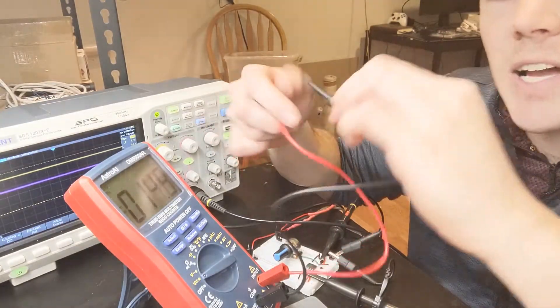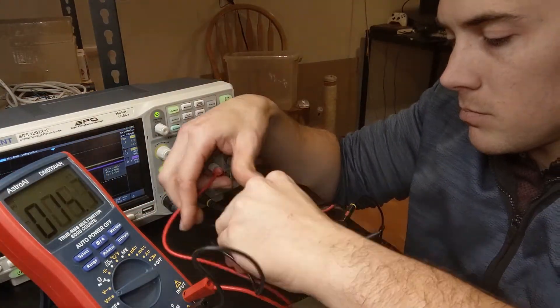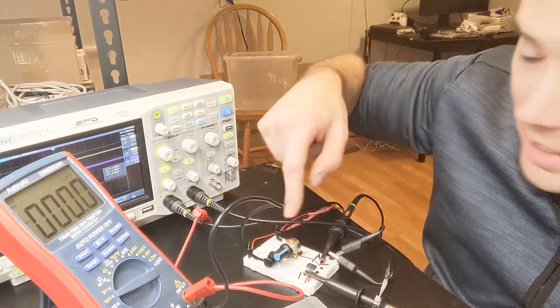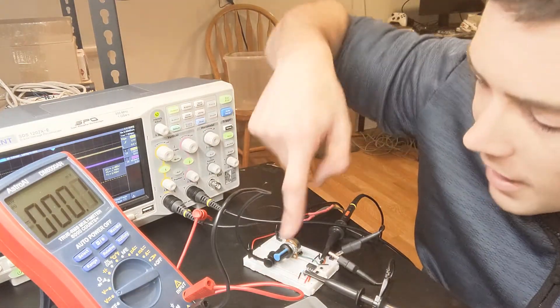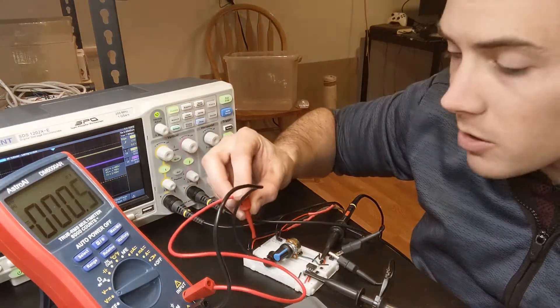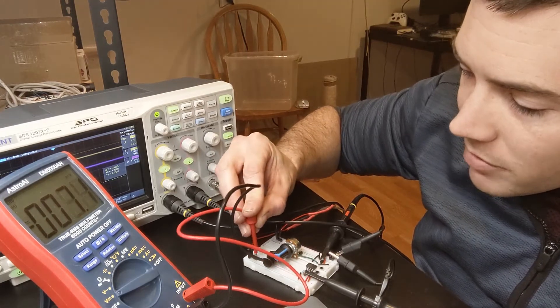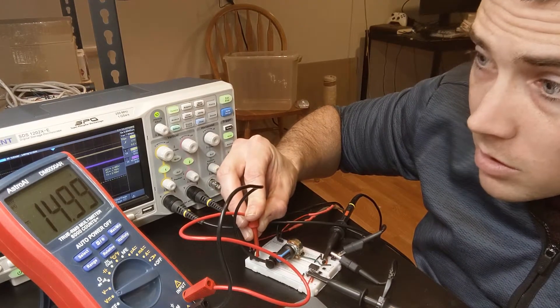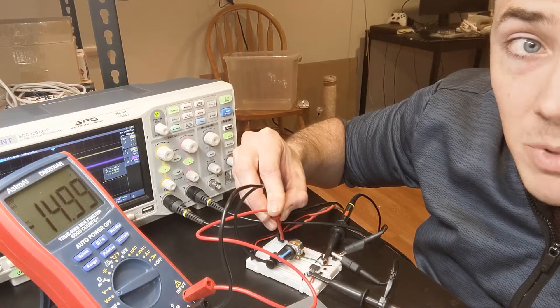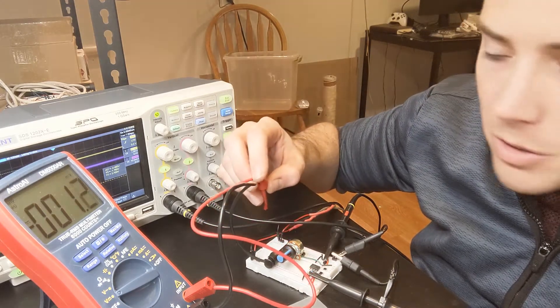Okay, so I'm attaching this black one to ground. I have a ground rail on both sides of the breadboard on the farthest edges. Over here, where I'm pointing right now, this is where the plus 15 volts is coming in, as you can see. And over here is where the minus 15 volts is coming in, as you can see. I'm getting that from a dual tracking power supply.